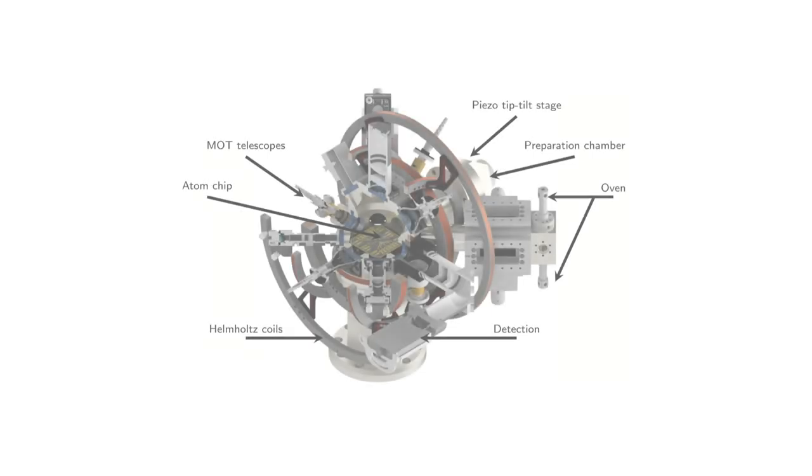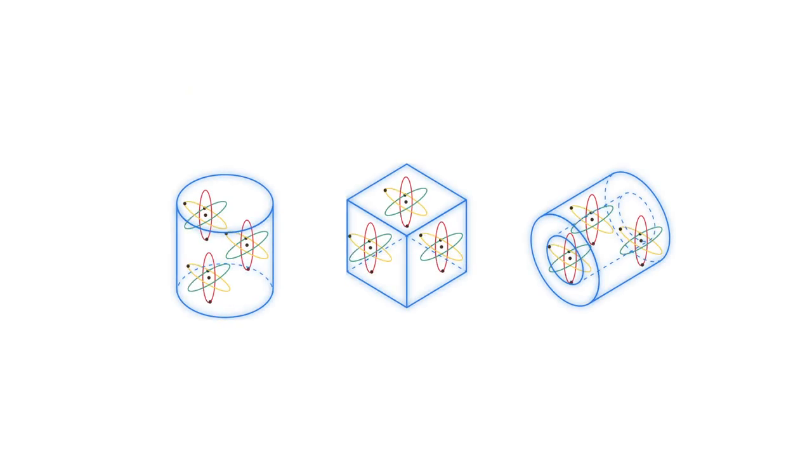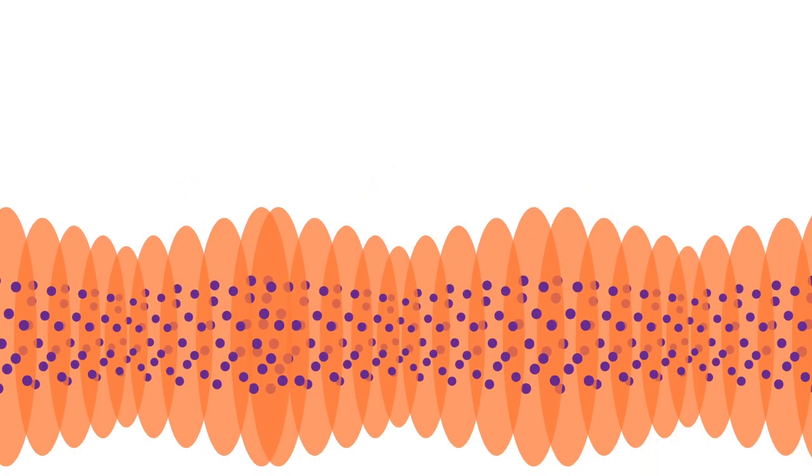Magnetic traps are generated by a multi-layer atom chip and multiple pairs of coils. Furthermore, atoms can be exposed to blue detuned laser light to create traps of arbitrary shapes in 3D. Red detuned light can also be used to create optical lattices.